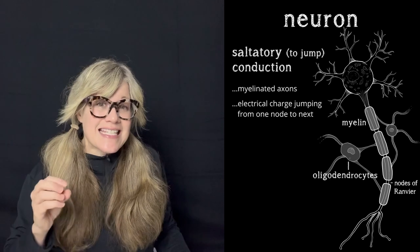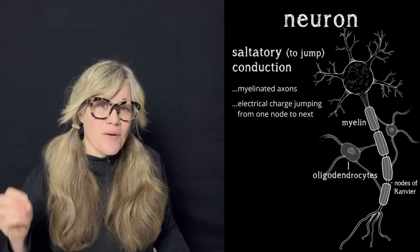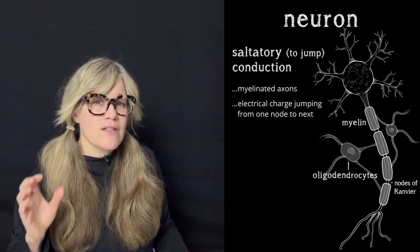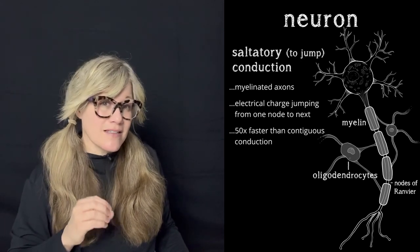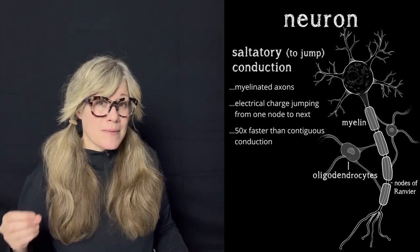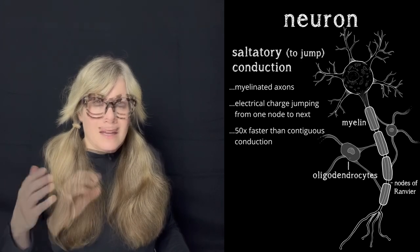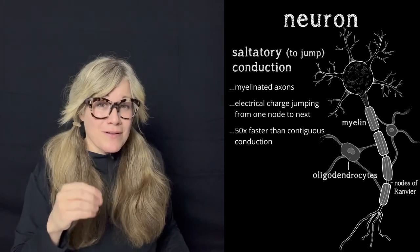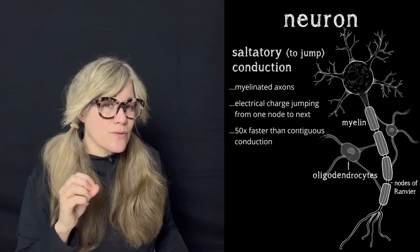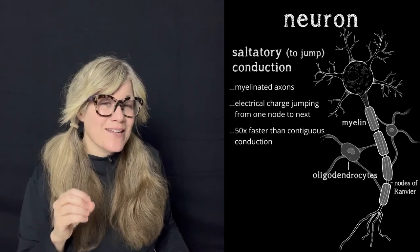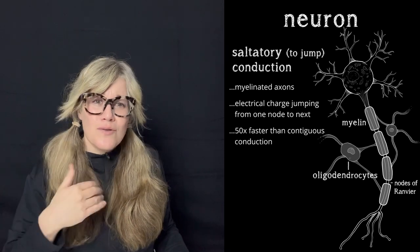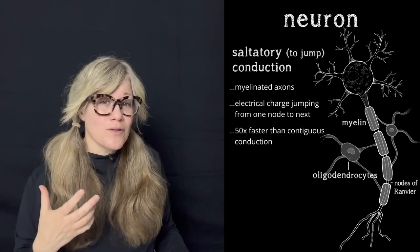Saltatory conduction is an electrical charge jumping from one node to the next, and this significantly increases the speed of the electrical pulse to about 50 times faster than contiguous conduction. This is important for neural pathways that need to respond quickly to input. Consider your visual pathways — there is a bundle of axons that runs from the neurons in your retina to the back of your brain called the optic nerve, and it contains roughly 1 million myelinated axons because that information has to zip at lightning speeds to where image processors live, so you can make sense of those inputs by turning them into forms you can recognize.